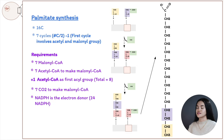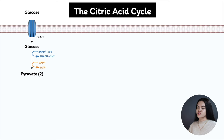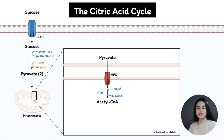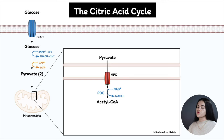Fatty acid synthesis occurs in the cytoplasm, but acetyl-CoA comes from within the mitochondria — from pyruvate oxidation and amino acid metabolism. Pyruvate is transported into the mitochondrial matrix by the mitochondrial pyruvate carrier (MPC), where it's converted to acetyl-CoA by the pyruvate dehydrogenase complex. Since the inner membrane is impermeable to acetyl-CoA, a shuttle is required to transport it to the cytosol — the citrate shuttle.